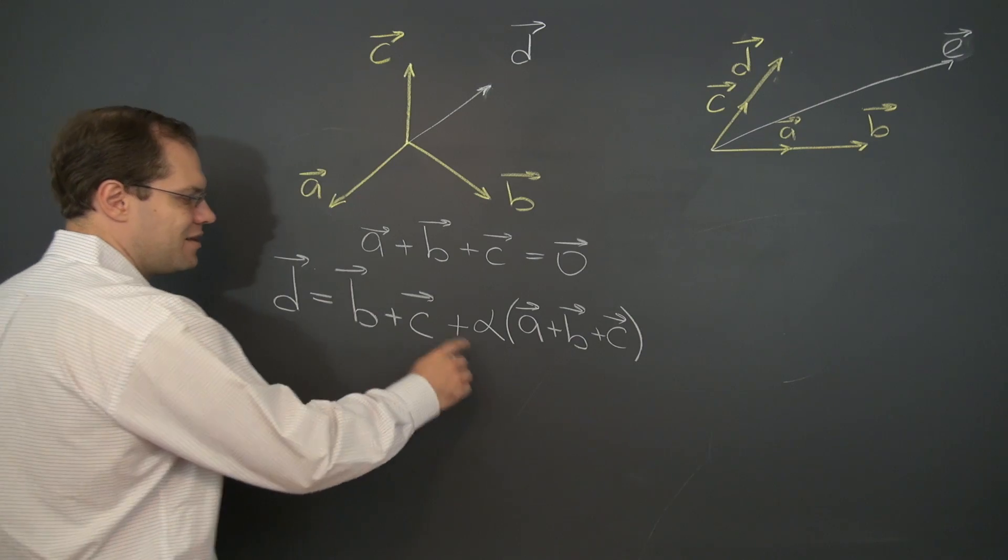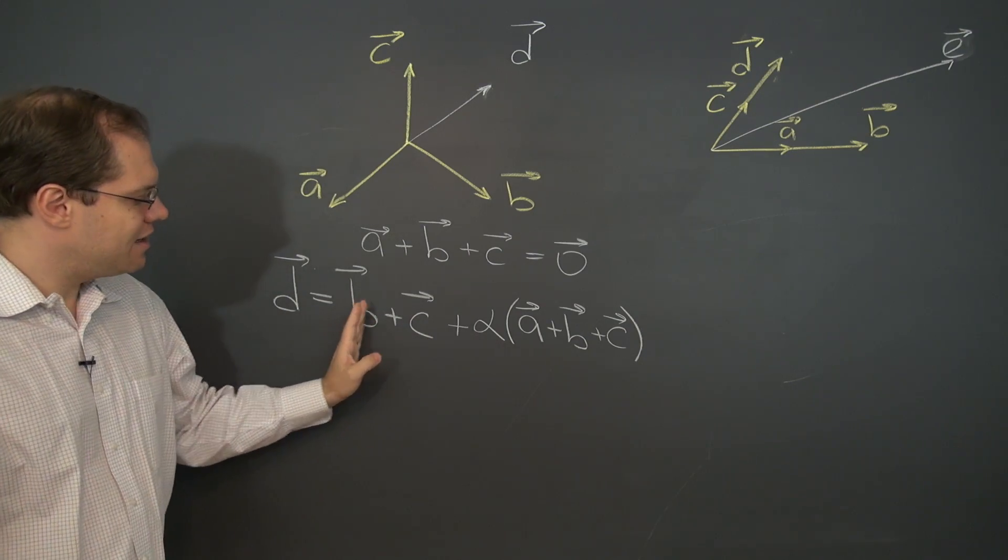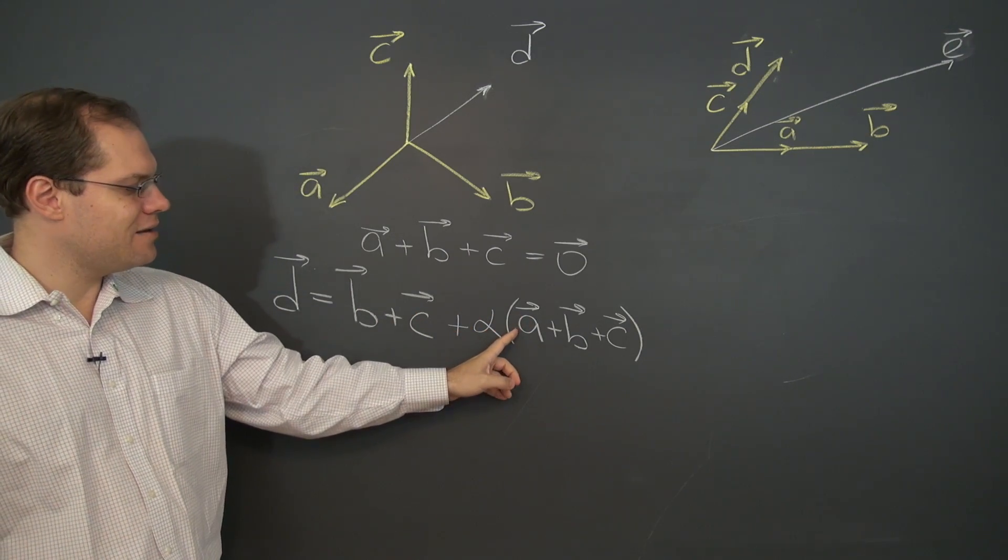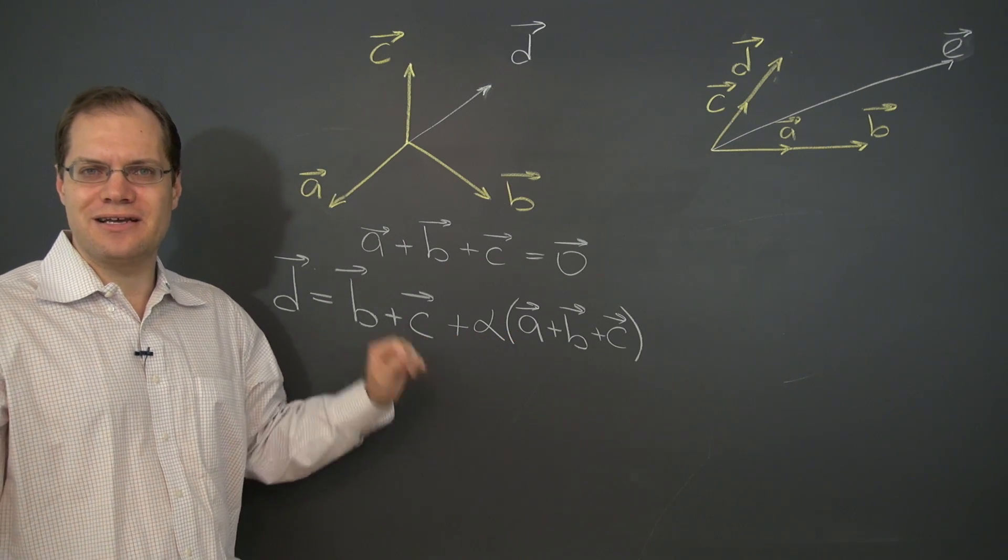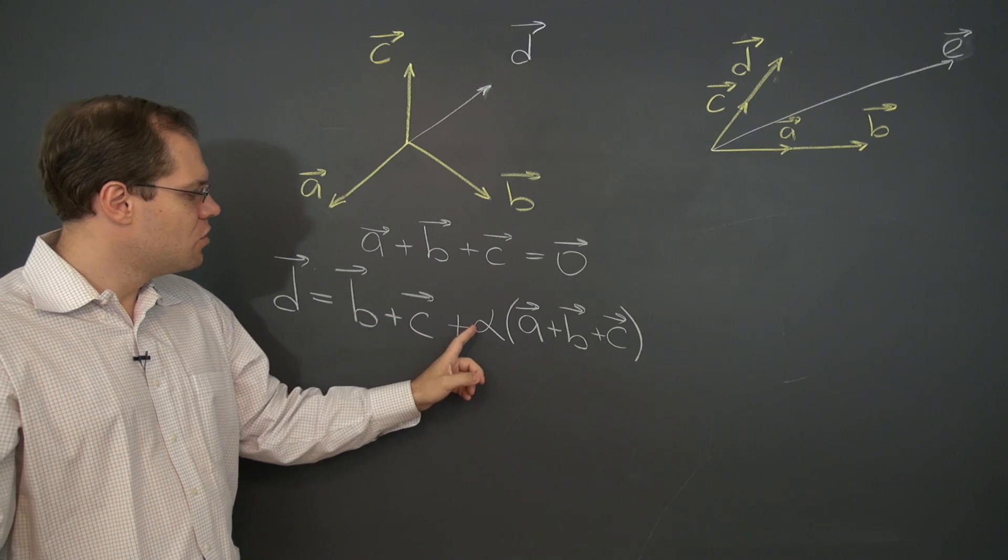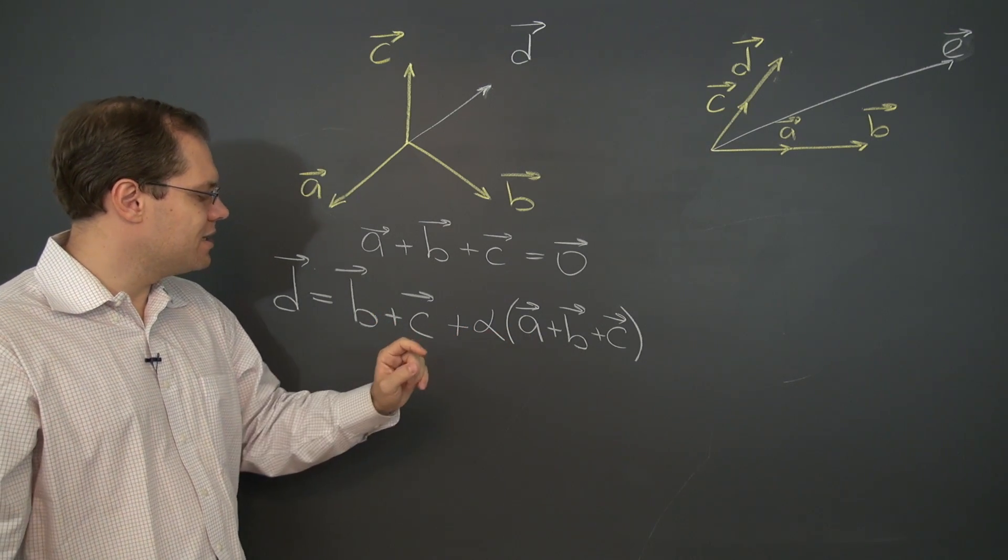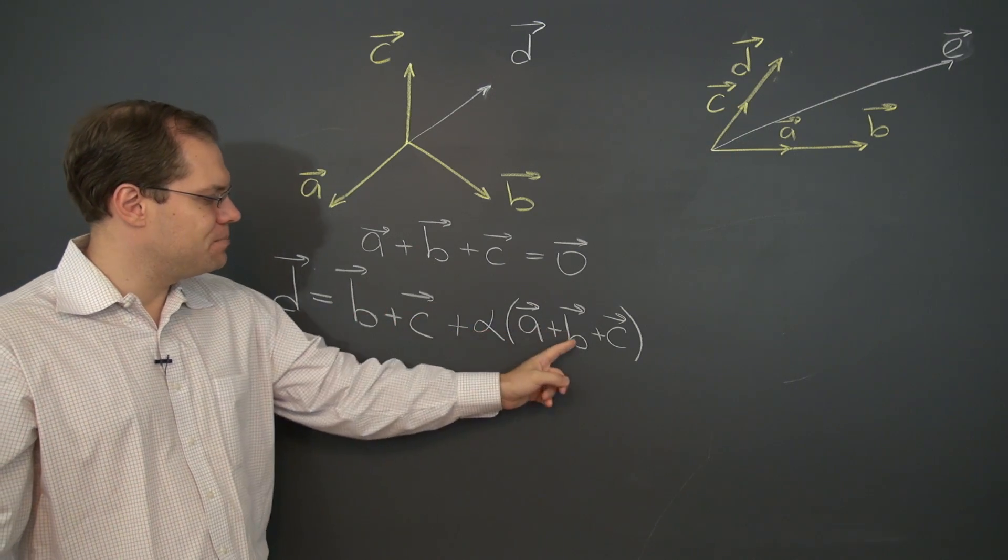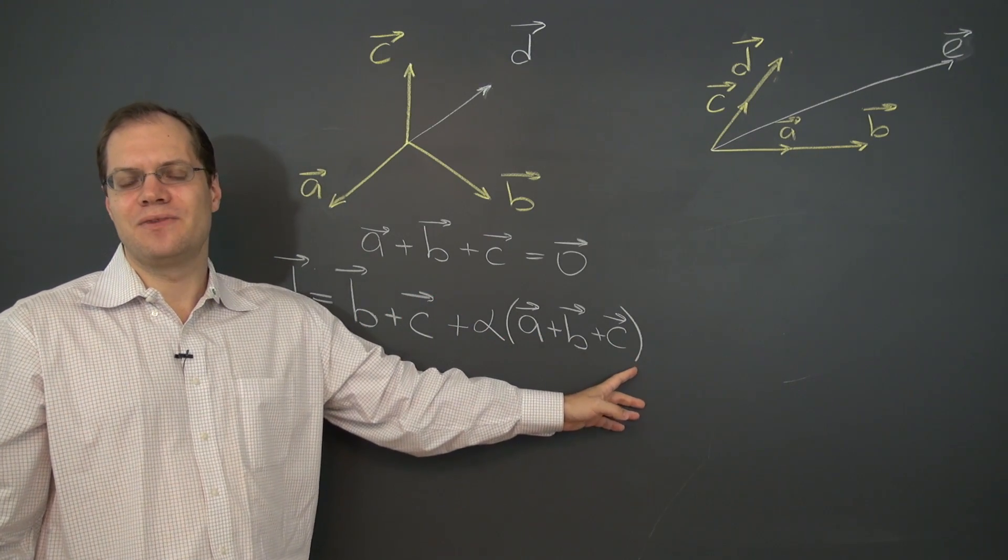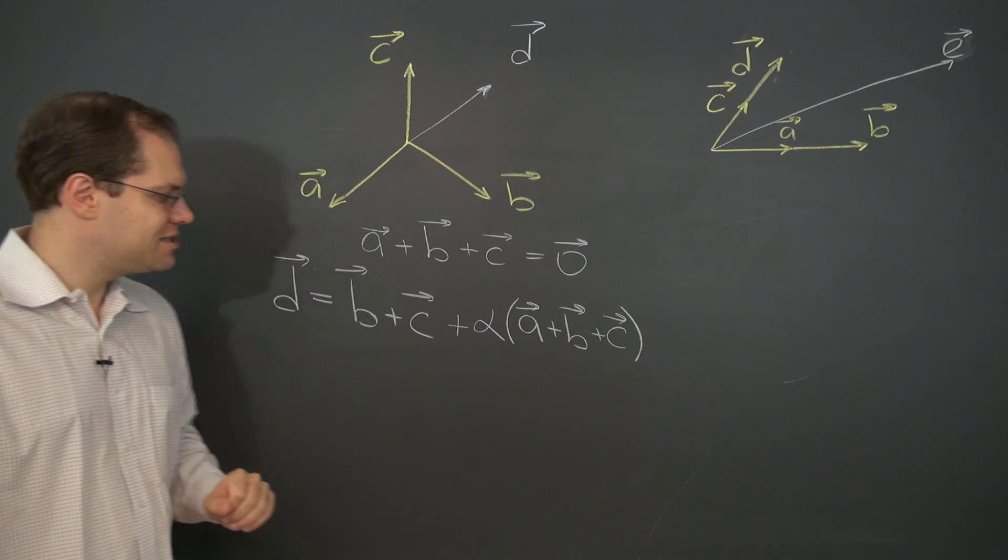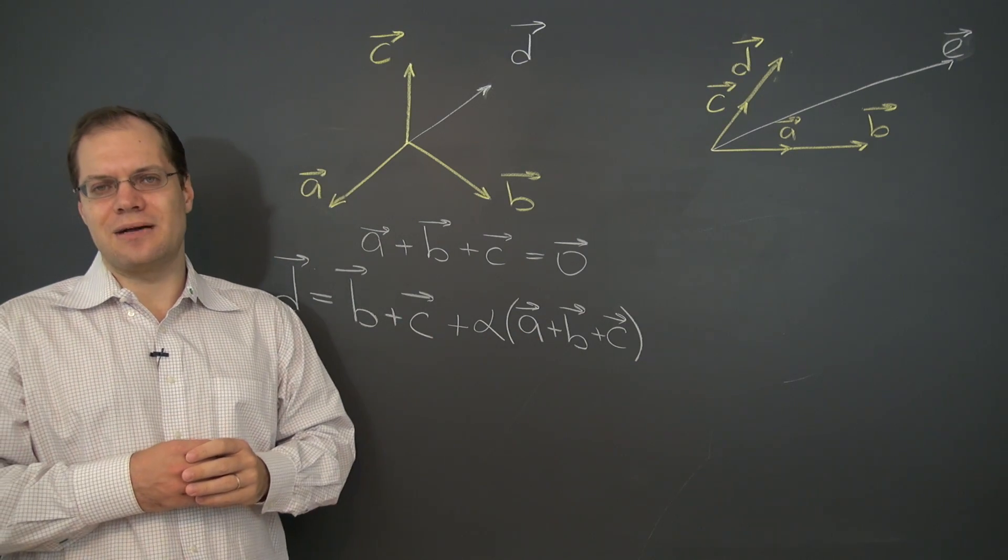And of course we can write it by combining the vectors. So we could write alpha a. I'm just saving the space on the board so I'm not writing it but I'll say it out loud. So alpha a plus one plus alpha b plus one plus alpha c. That would be a more standard way of writing linear combinations.